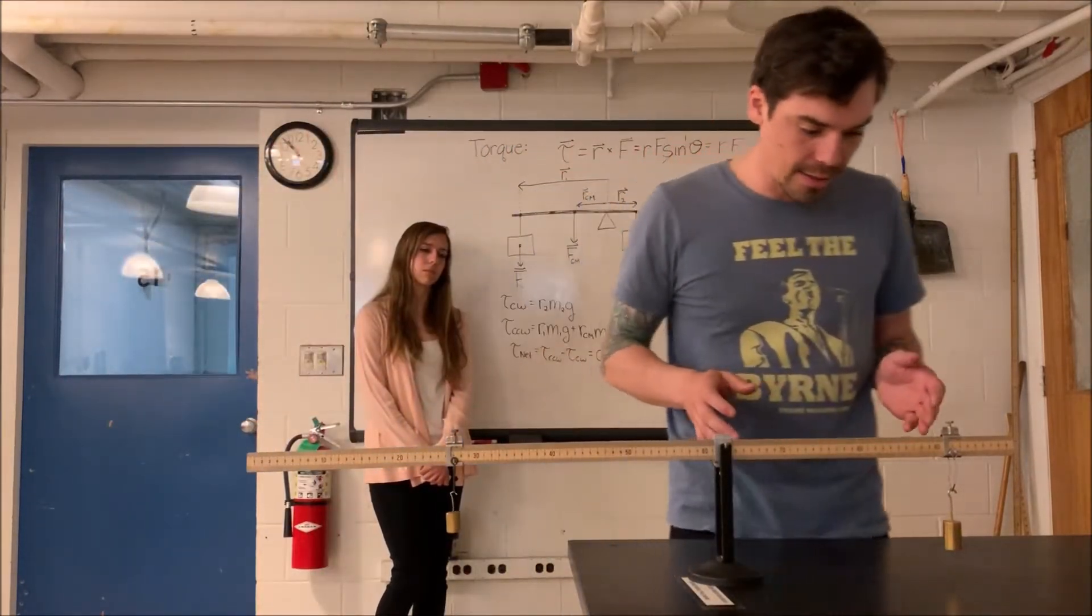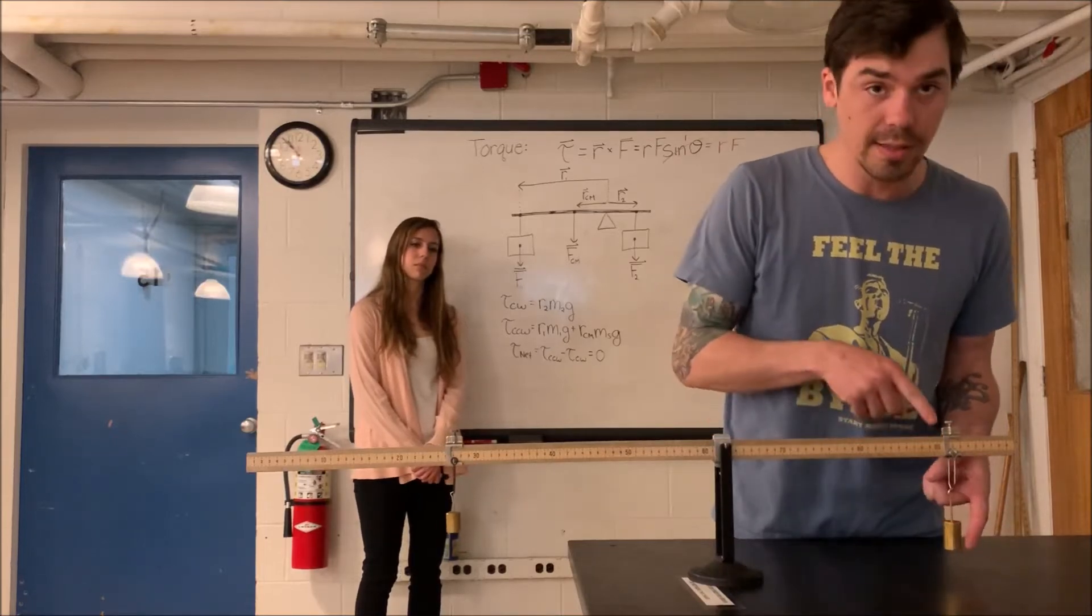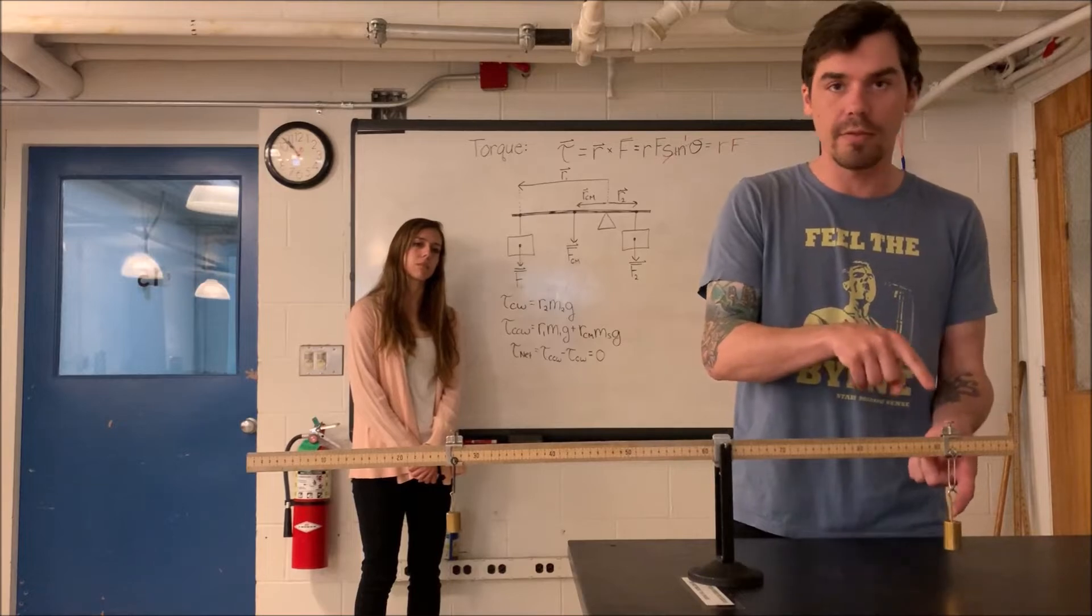On the right side of the stick, we have this distance and this mass times gravity. We're not going to give you this mass. This is going to be the unknown mass that you have to solve for.